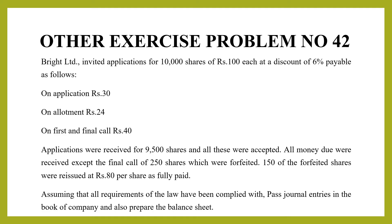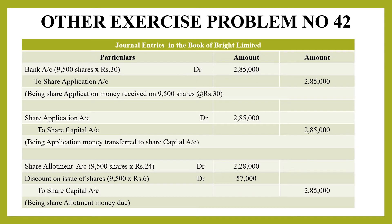Now let's see how to work out this problem. We need to pass the journal entries as well as prepare the balance sheet. First, for the journal entry, the application money received — for 9,500 shares at 30 rupees each, the amount is coming in. So bank account is debited. And it goes to share application money account, that is 2,85,000 rupees. So share application is credited.